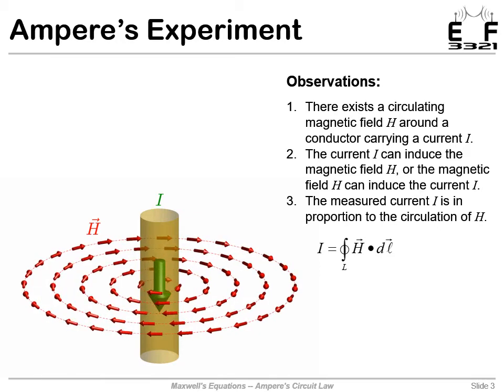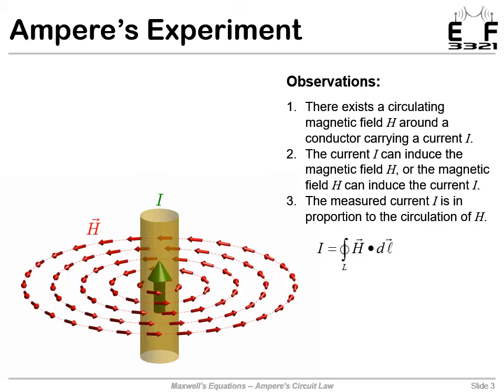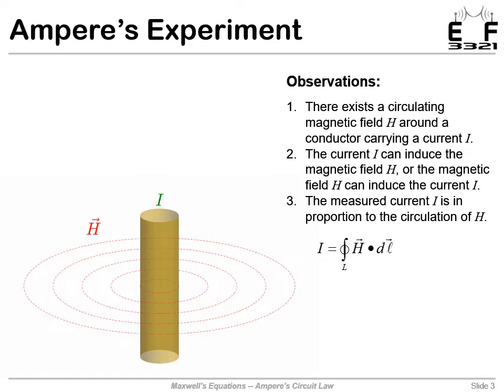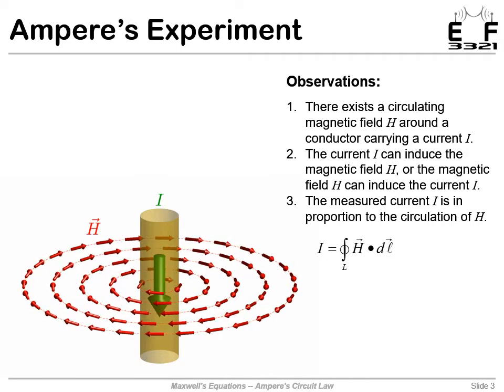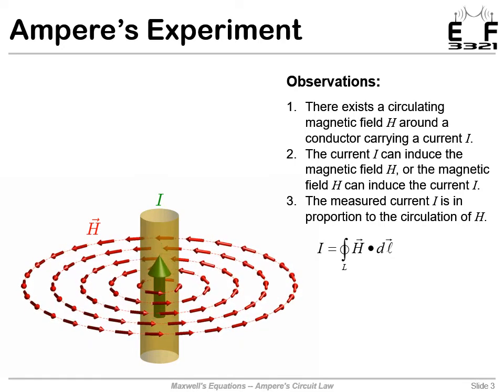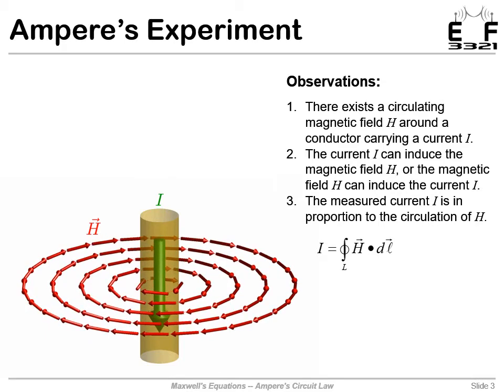The other thing we observe: the stronger the current, the stronger the magnetic field. That works both ways. If we started with a strong magnetic field, we'd get a stronger current. If we started with a stronger current, we'd get a stronger magnetic field. The strength of the magnetic circulation indicates and correlates to the strength of the current through the axis of that rotation.